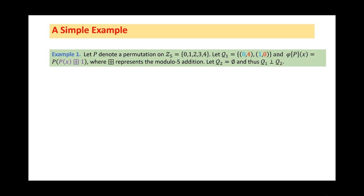As a warm-up, let's see a simple example. In this example, P is a permutation on ℤ₅, and Q₁ contains two pairs, (0,4) and (1,0). The construction Φ_P invokes P two times, and maps x to this value. For simplicity, we let Q₂ be empty set. Thus, the two target paths we want to complete are as follows, and the star₁ and star₂ are the inner nodes to be assigned.